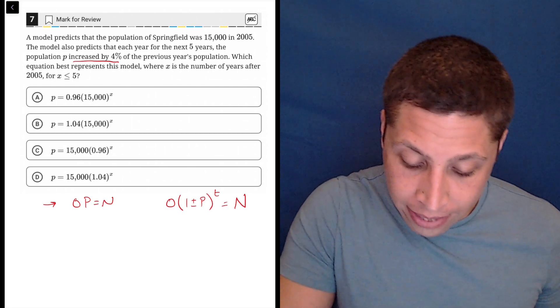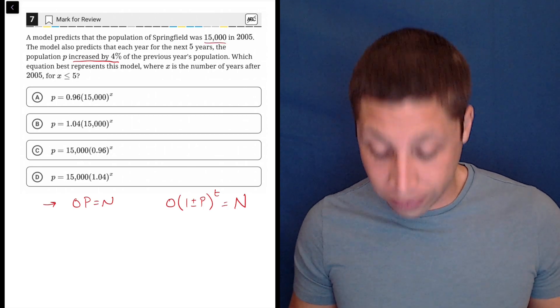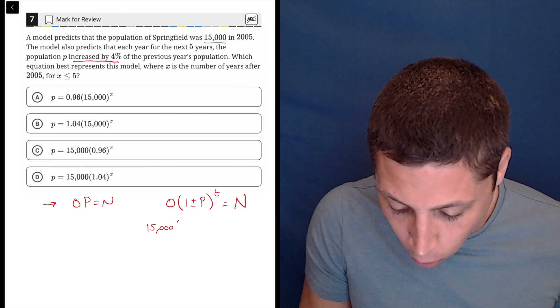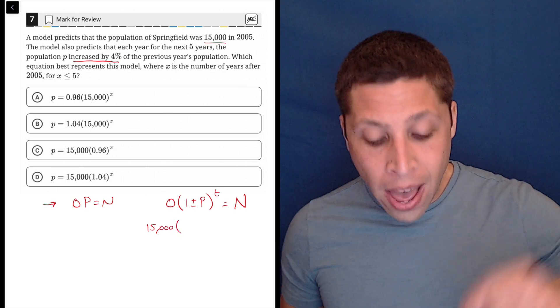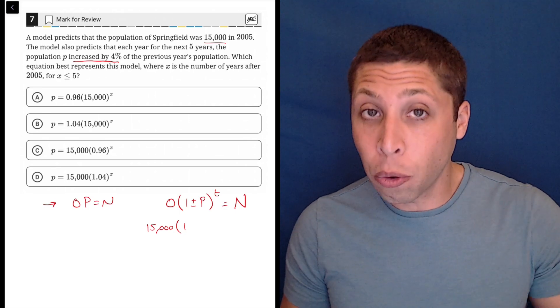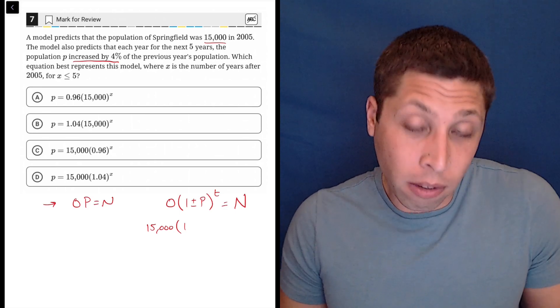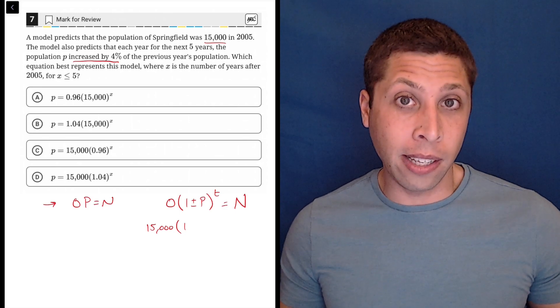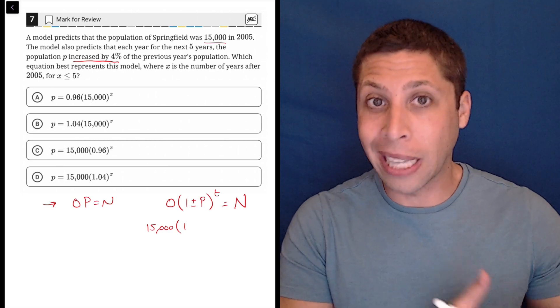So what is my original value? They tell me that the starting value is 15,000. So that's going to go in that opening spot. Then we have to make a choice. Is it going to be 1 plus or 1 minus p?